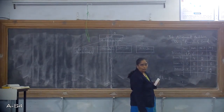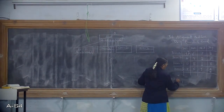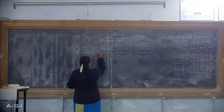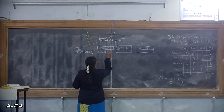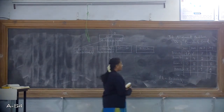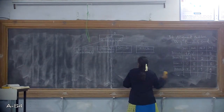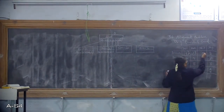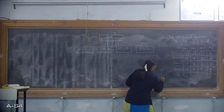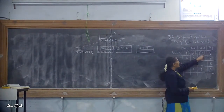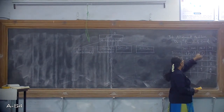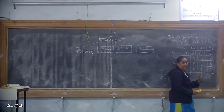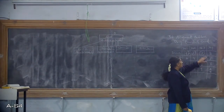We want to assign job J3 to person A. The cost associated is 7. So 7 is written here and this column is frozen temporarily. Do not select any of the values from the remaining rows in that column. This 7 is fixed.